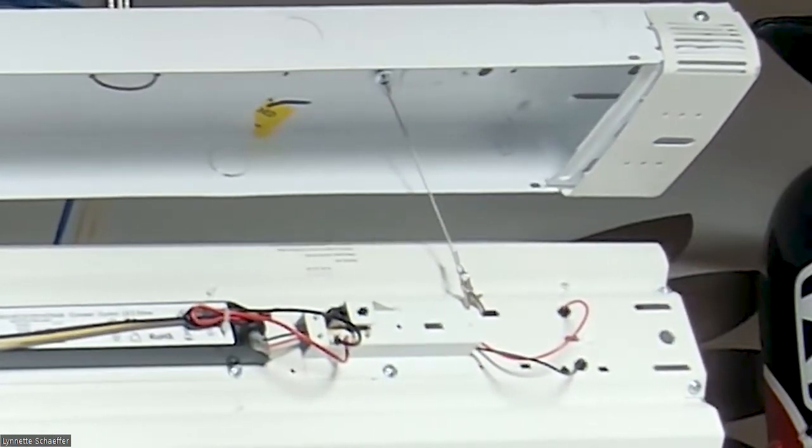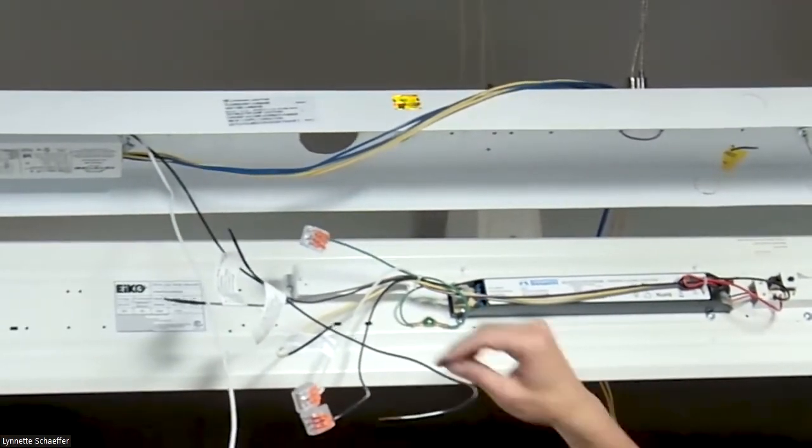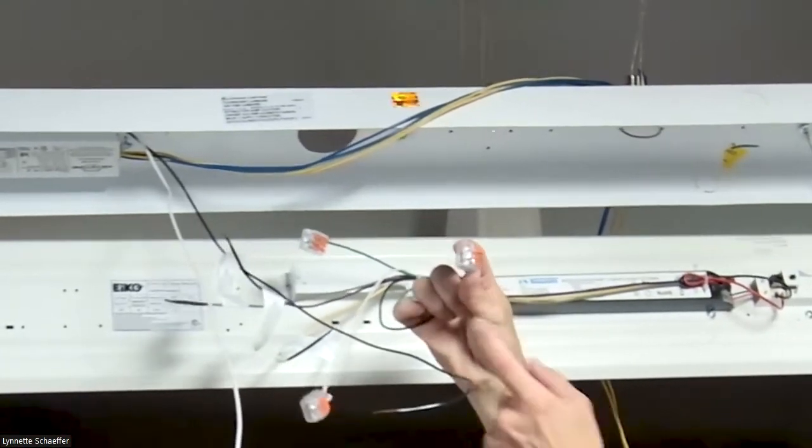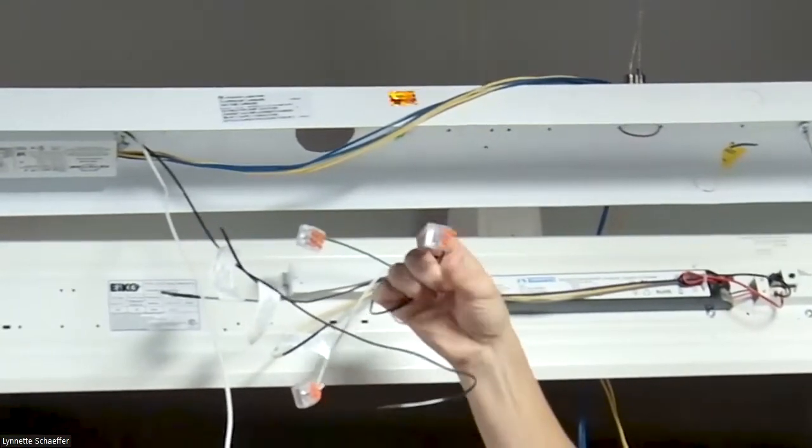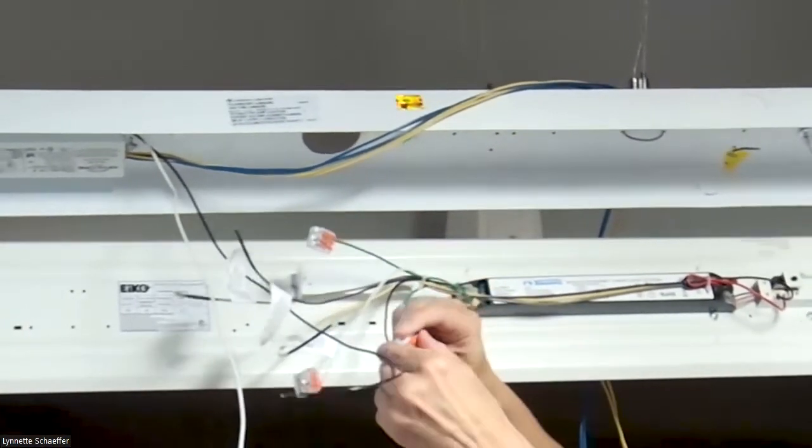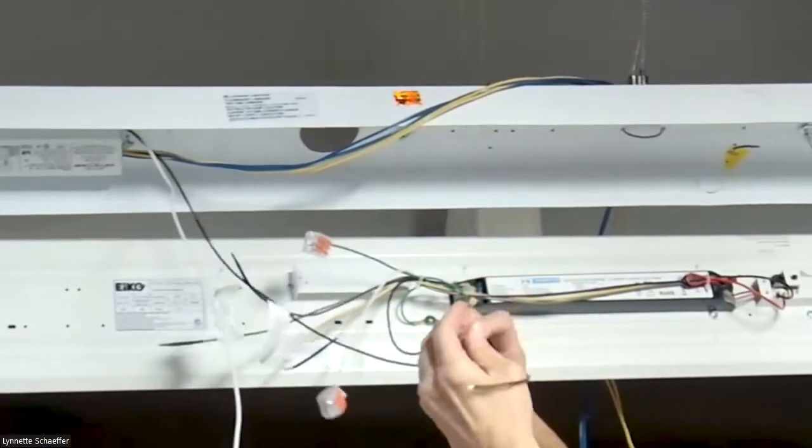Also, another really nice selling feature of this particular fixture are the quick disconnects. A lot of times contractors love these because it expedites installation time drastically. You're not having to worry about making these connections, all you have to do is just pop open the little clip and then you stick in your electrical power. Very simple.